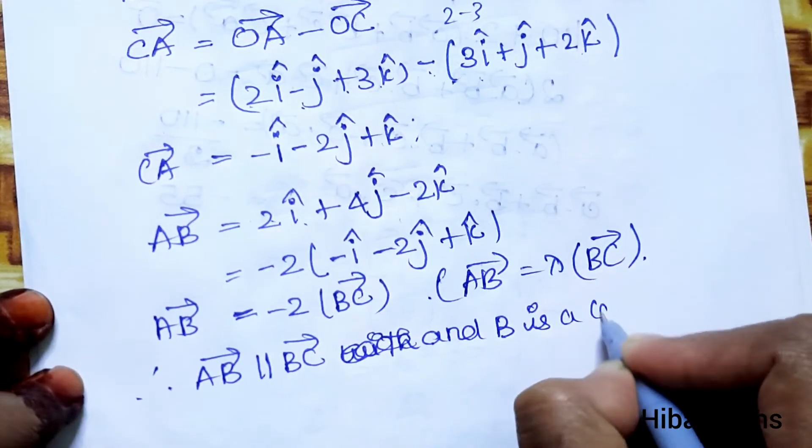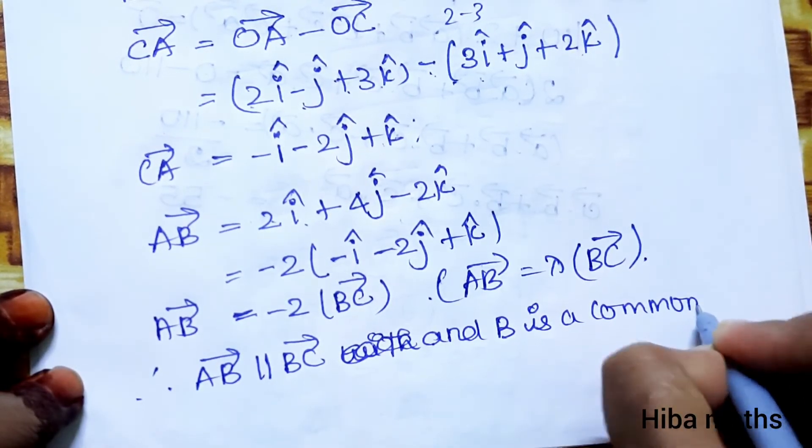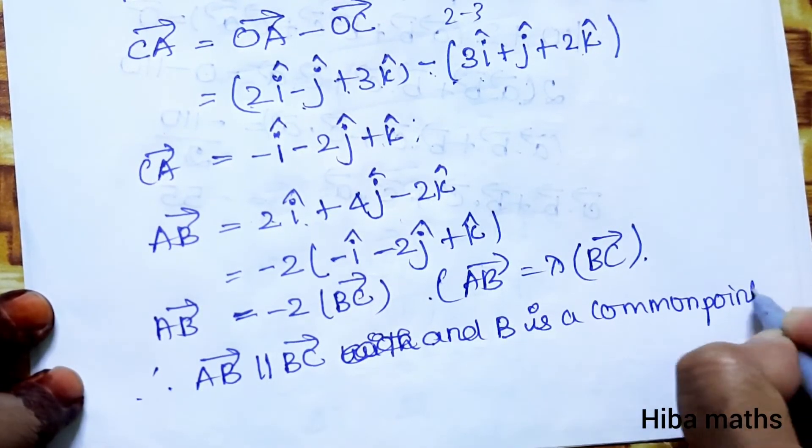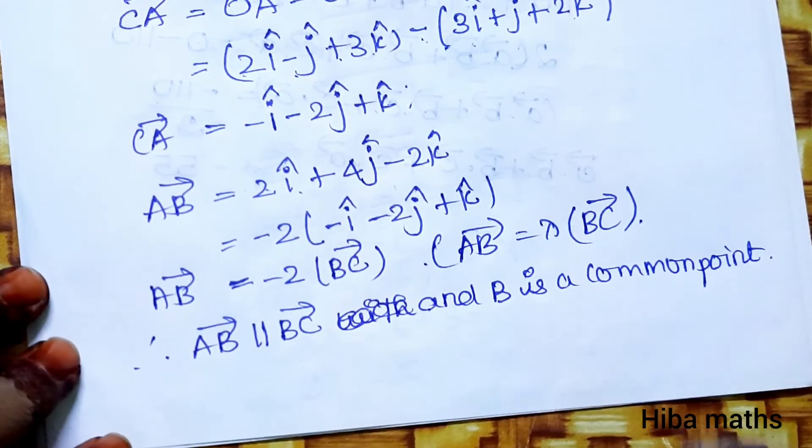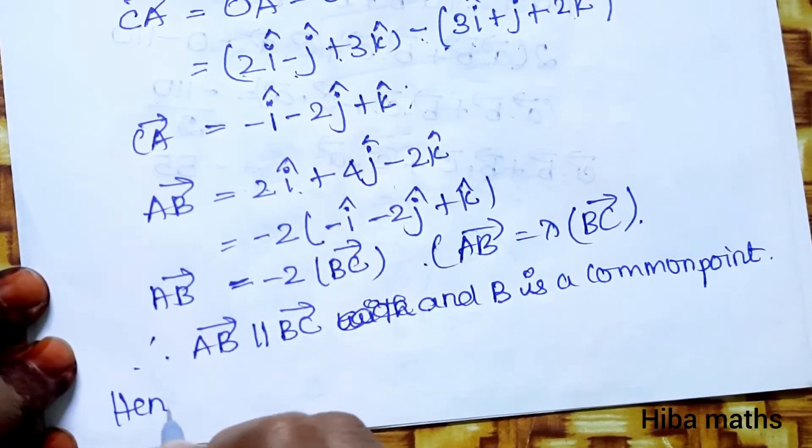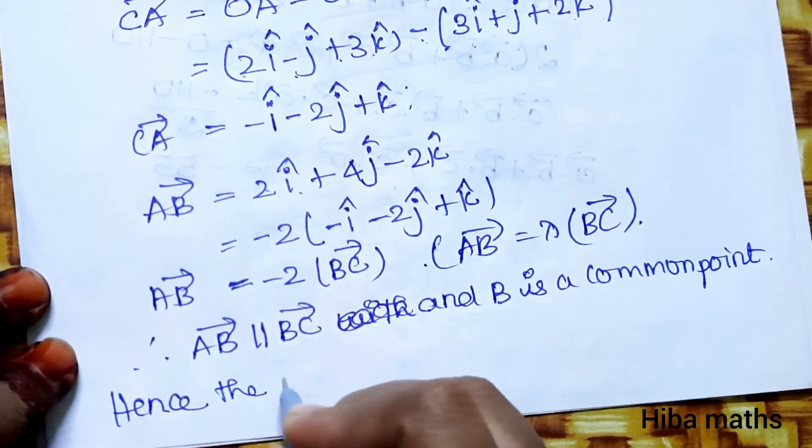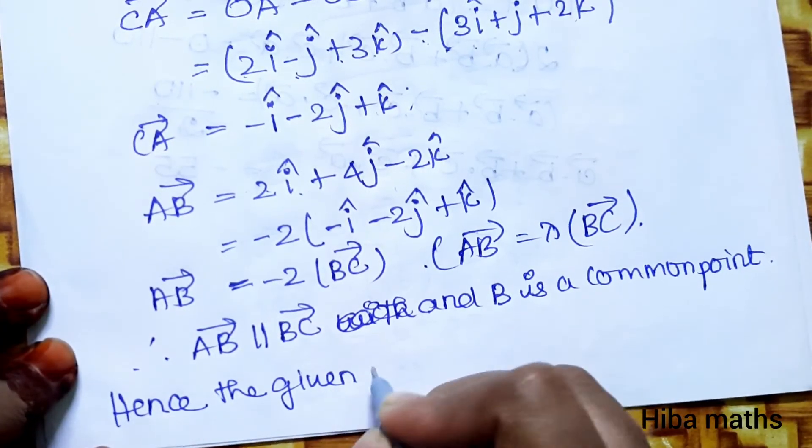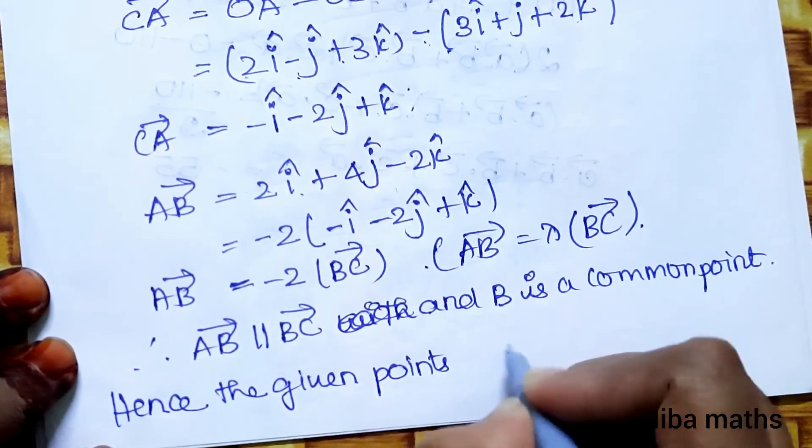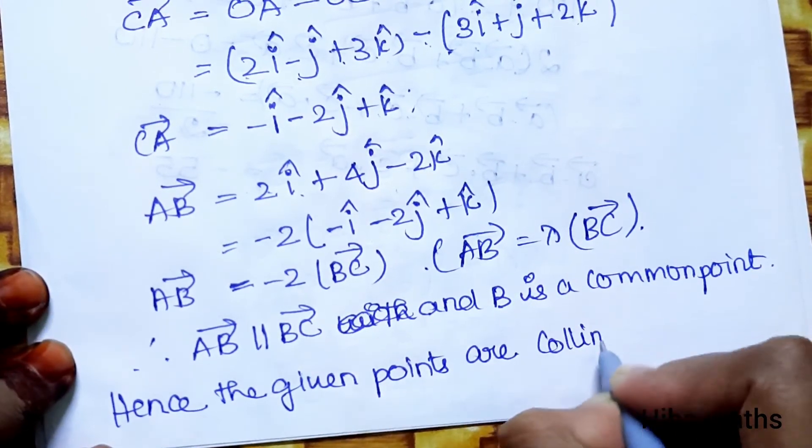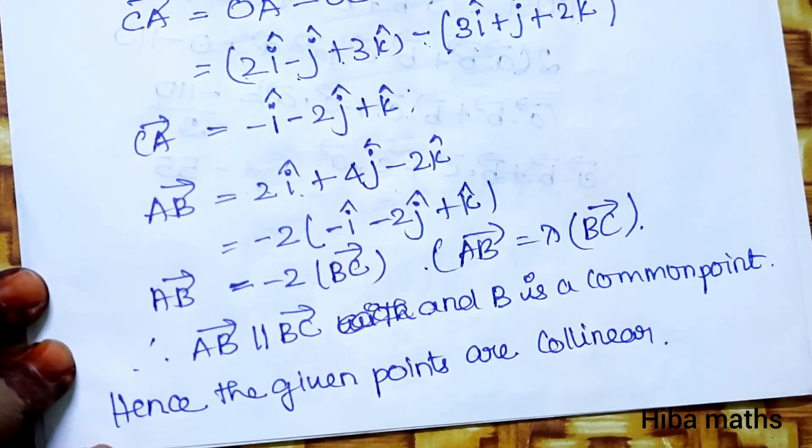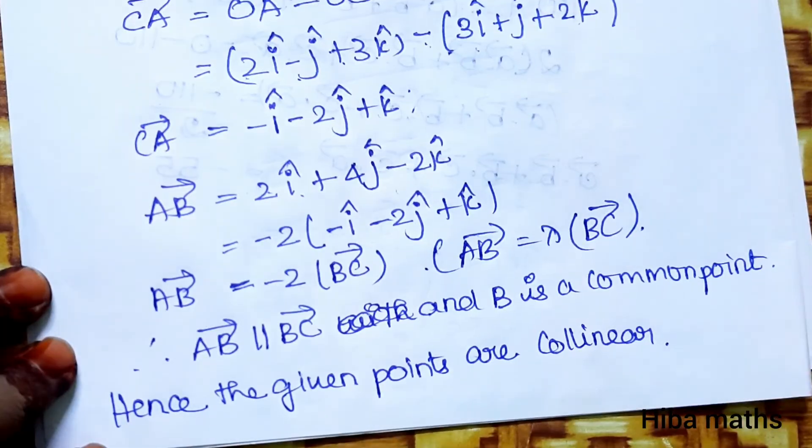B is a common point. Since AB is parallel to BC and they share point B, the given points A, B, C are collinear. Hence, the given points are collinear. Thank you for watching.